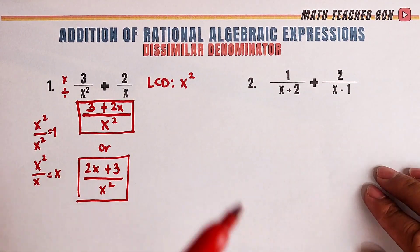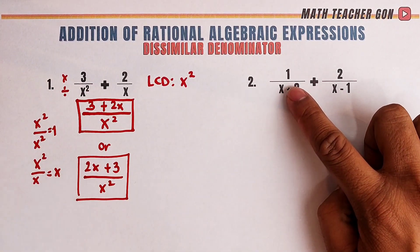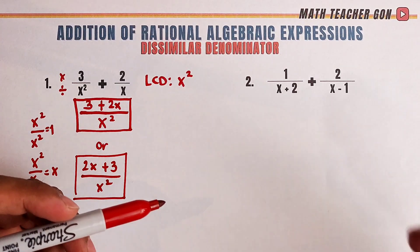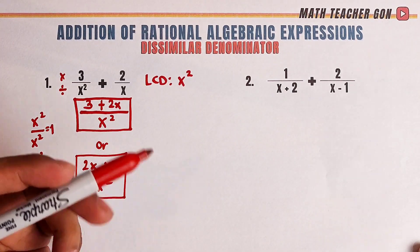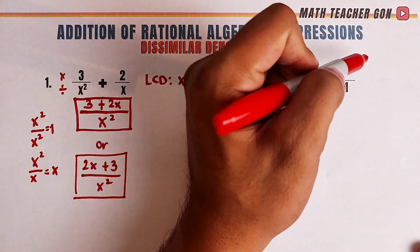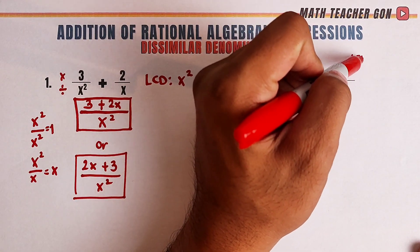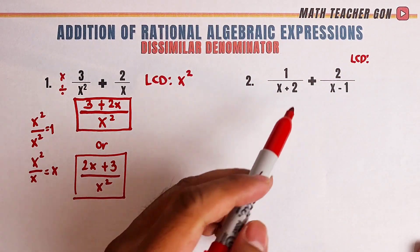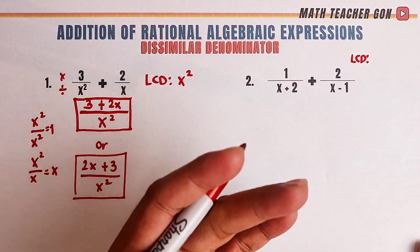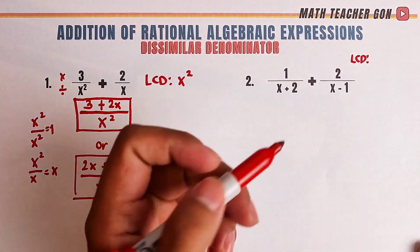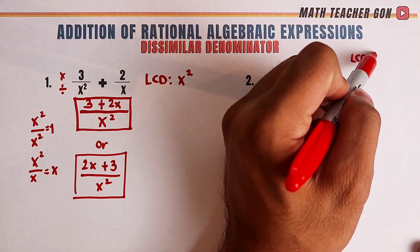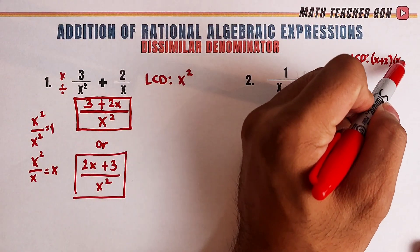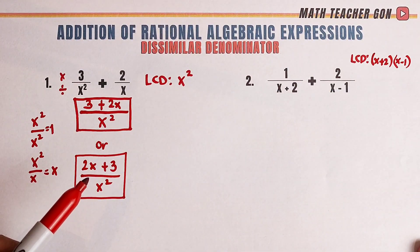Now, let's move on with item number 2. For number 2, what we have here is 1 over x plus 2 plus 2 over x minus 1. Same process. We need to know the LCD. So what is the LCD between the two denominators? As you can see, the denominators are both binomial and they are different. So what you do here is express them as factors. So what do I mean by that? We can use x plus 2 times x minus 1 as our LCD.